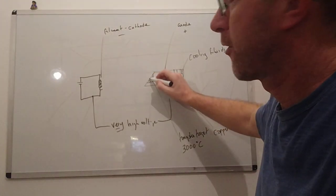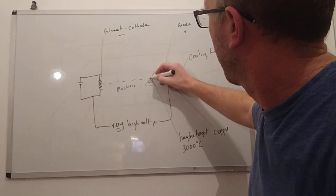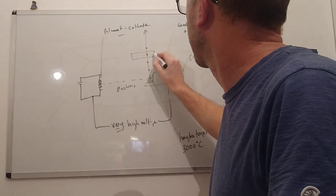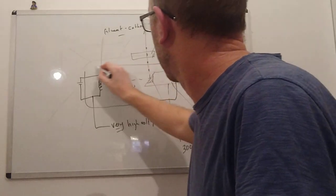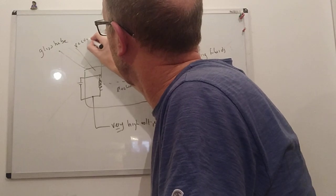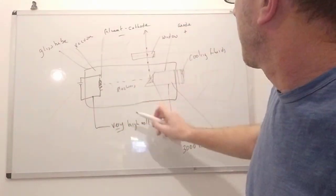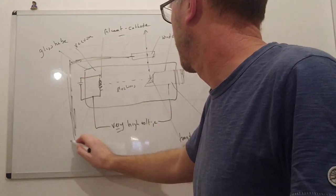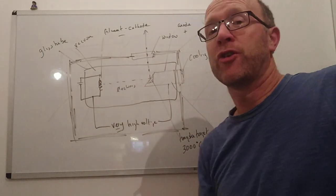Less than 1% of the kinetic energy is converted into x-ray photons. We also need to move the heat away, so the rest of the anode is made of copper, with some kind of cooling fluid or cooling fins to dissipate the heat. The x-ray photons are emitted at 90 degrees, so we have a window for them to pass through. Around all of this we have a glass tube with a vacuum inside, and we don't want electrons being stopped by atoms of air.